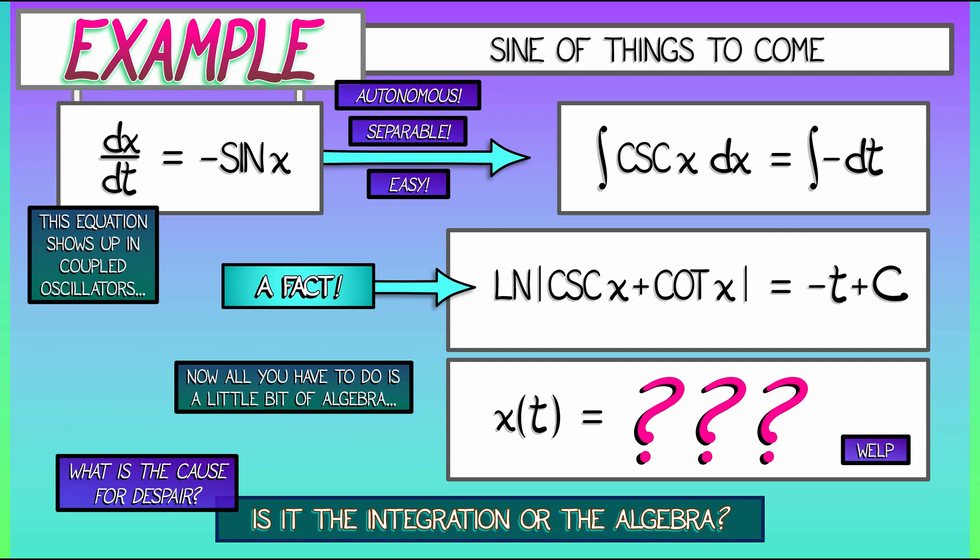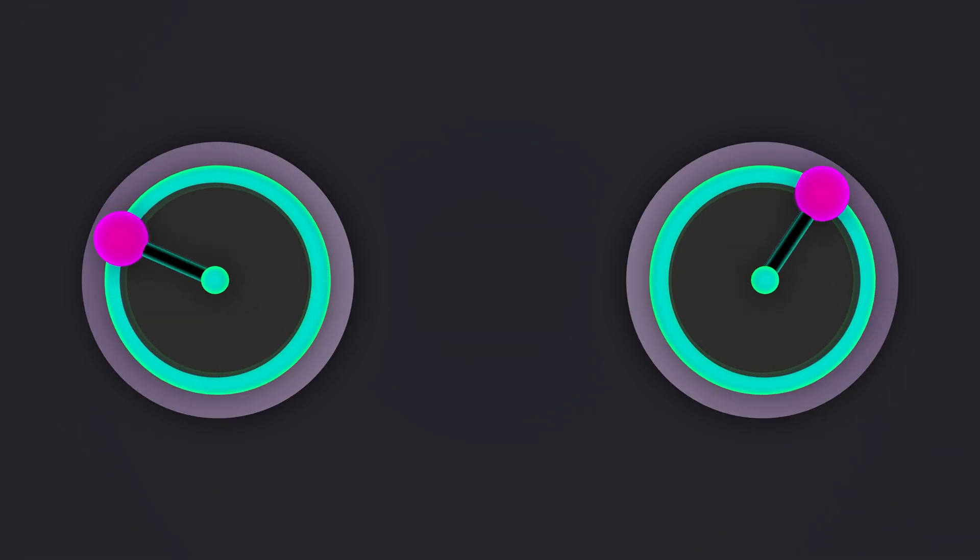We looked at the equation dx/dt equals minus sine of x, and it was really hard to solve. So what? Who cares? This is kind of an important equation. This equation shows up in coupled oscillators, where you've got a couple of things spinning or rotating or doing the same thing over and over, and they're coupled together.